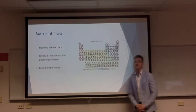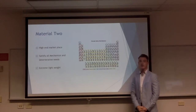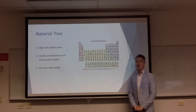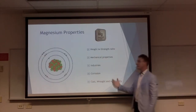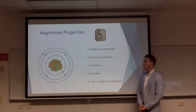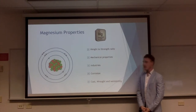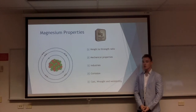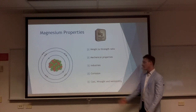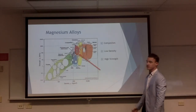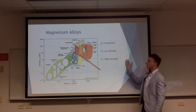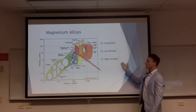Material number two is in the high end of the marketplace. It satisfies all mechanical needs of a bicycle frame and is extremely lightweight. Identified for this is magnesium. Magnesium has a great weight-to-strength ratio, with all mechanical properties needed, and is used in aerospace and aeronautical industries currently. However, it does have low corrosion resistance and does not perform well in castability, extrusion, and weldability. As you can see in the density versus strength graph, it shares properties with the composites family — extremely low density and high strength.